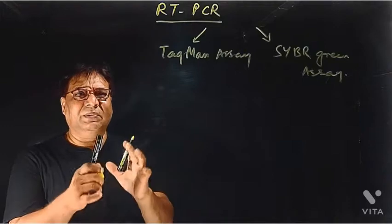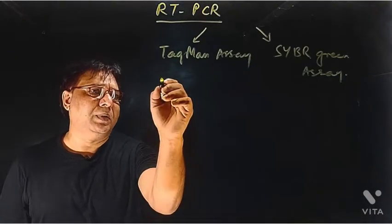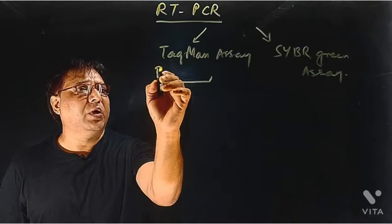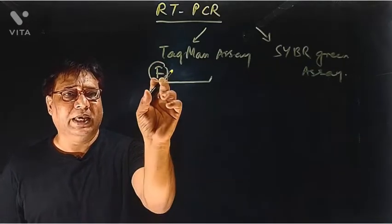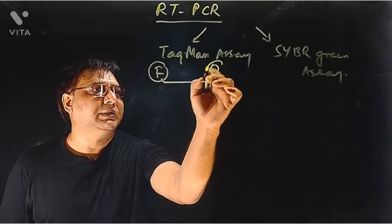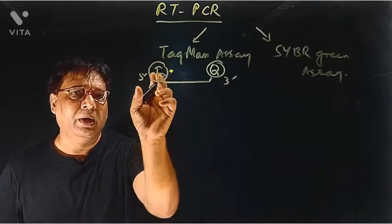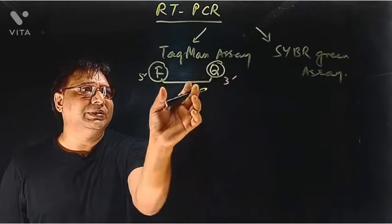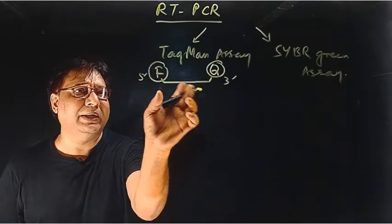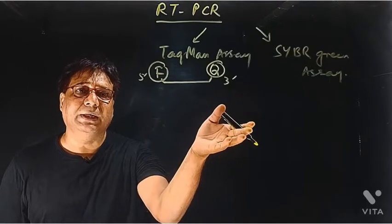Let's discuss what this assay is. The TaqMan assay uses a probe, a small oligonucleotide molecule which has a fluorophore molecule, designated as F. This fluorophore is a molecule which will emit fluorescence, and there is a quencher at the other end. At the 5' end, this probe has a fluorophore, and at the 3' end there is a quencher. When this quencher is at close proximity to the fluorophore, the fluorophore is not able to produce any fluorescence. This probe has to bind with the double-stranded DNA that is being amplified in PCR.